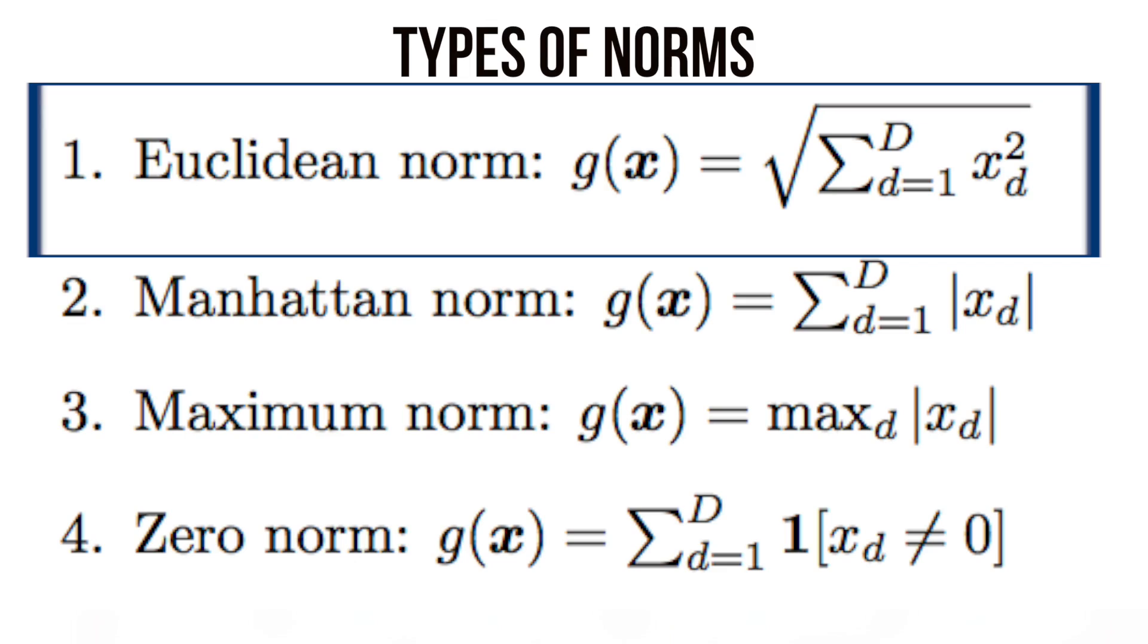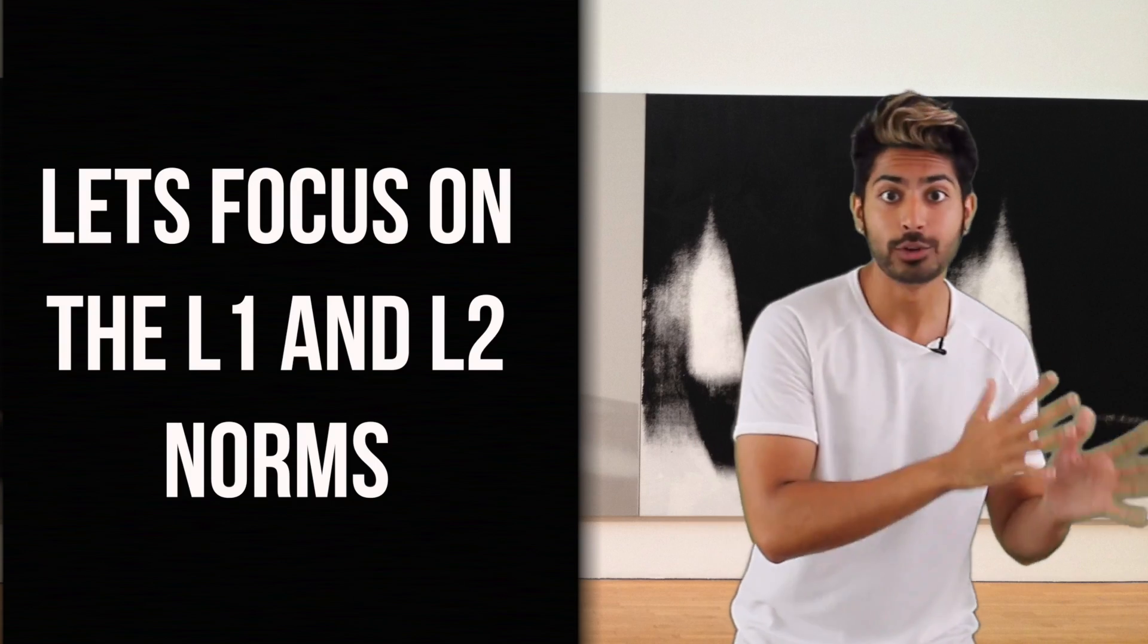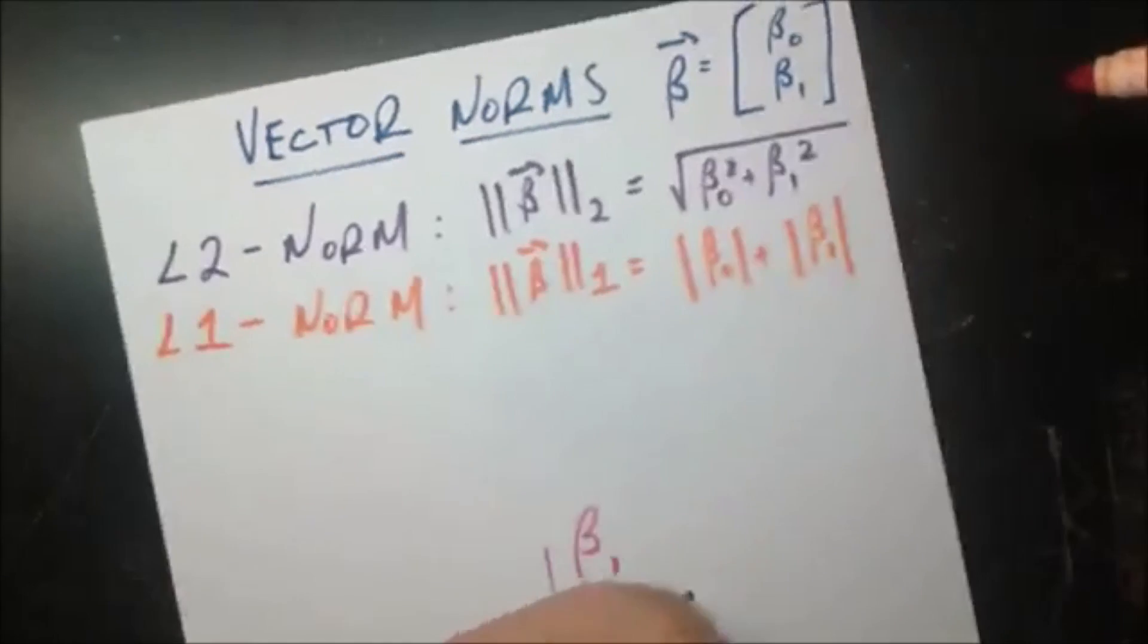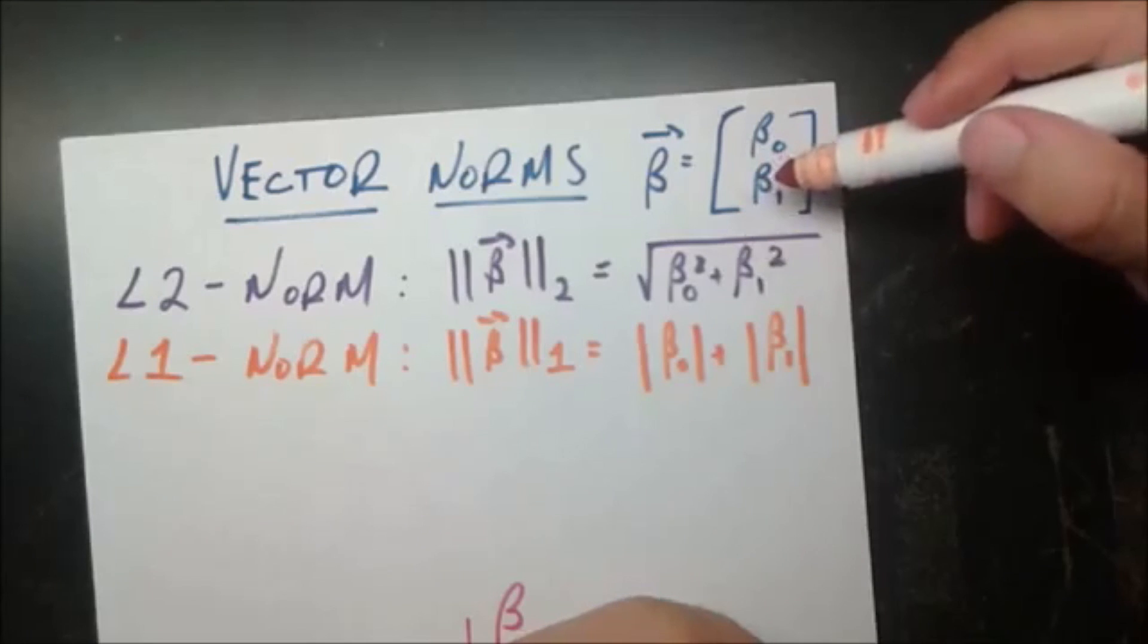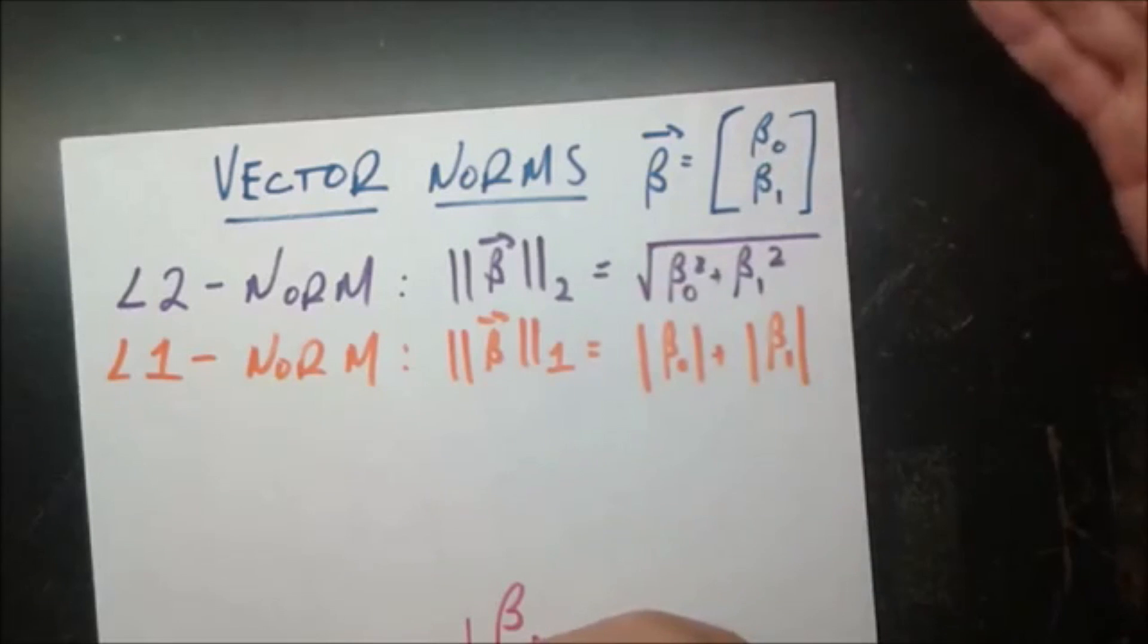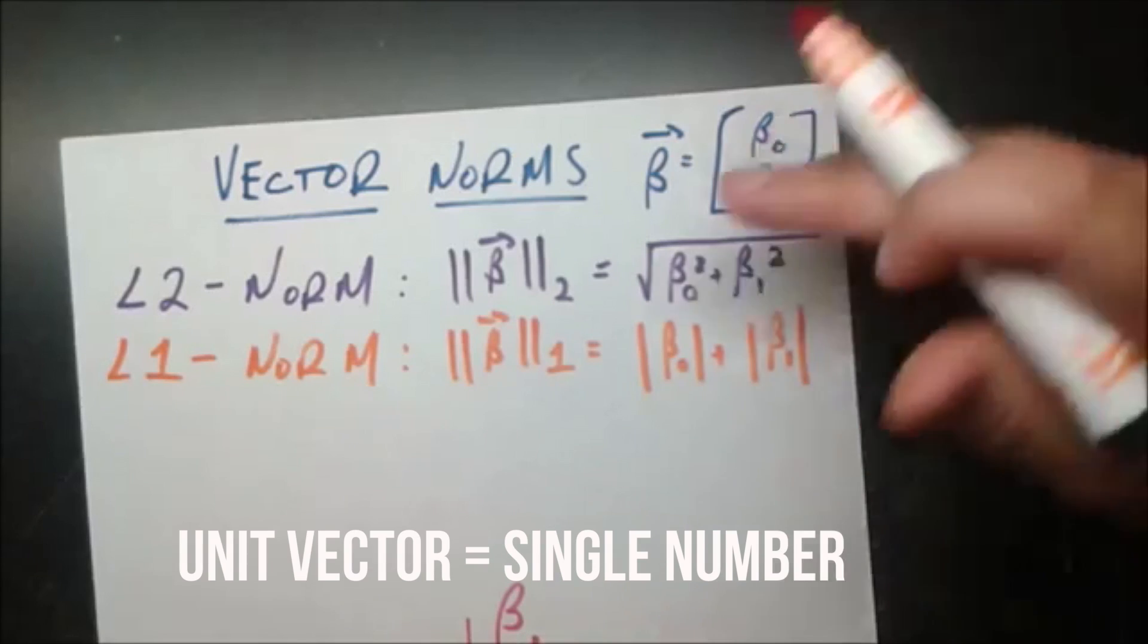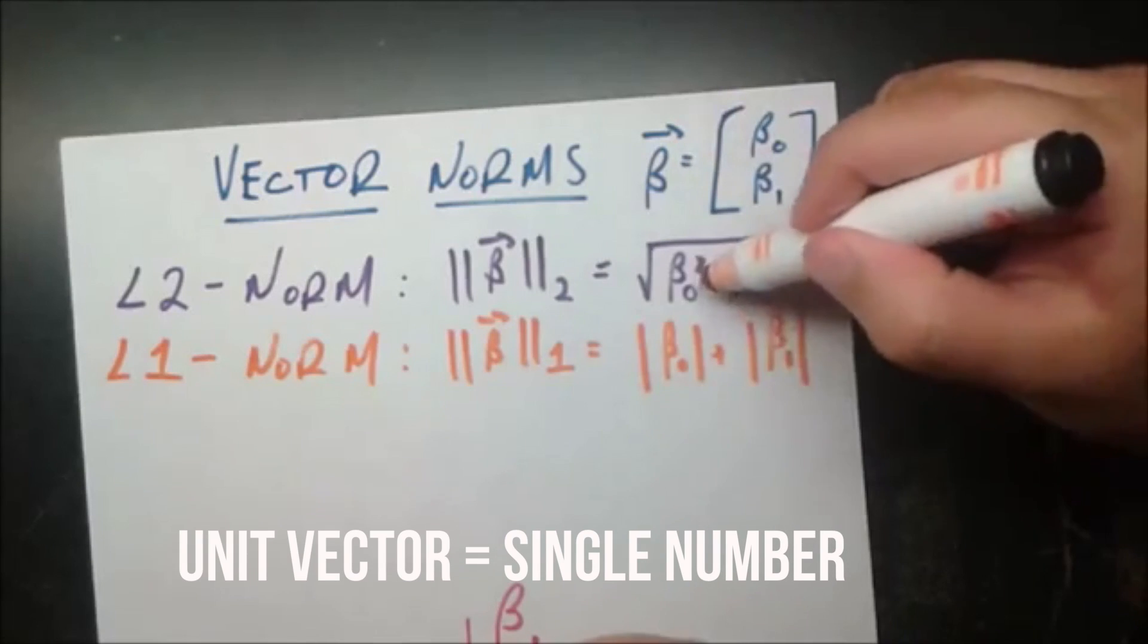But this isn't the only way to define length. There are others. You'll see the terms L1 norm and L2 norm used a lot in machine learning. The L2 norm is the Euclidean norm. The L1 norm is also called the Manhattan distance. We can use either to normalize a vector to get its unit vector and use that to compute the distance.